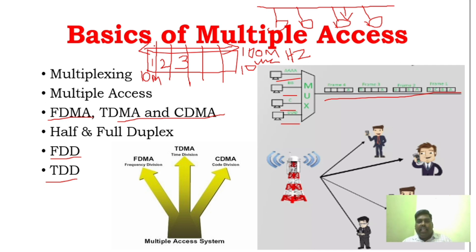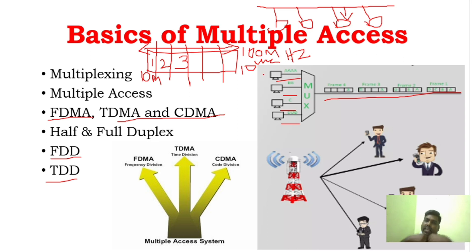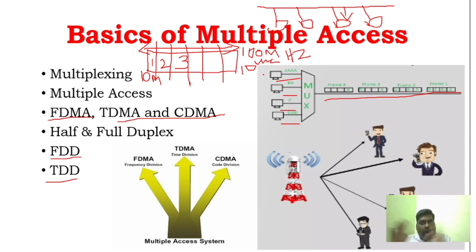Code Division Multiple Access: as the name implies, CDMA has no frequency limit and no time limit. Any number of users can use it simultaneously. Each user is given a separate code, so that each user's transmitted signal is different. These codes are orthogonal to each other, so that interference is minimized. This technique uses pseudorandom codes — that is the CDMA concept.